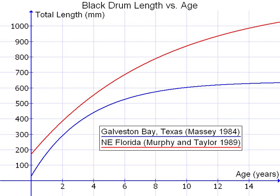In addition, fishery biologists often use a third measure in fishes with forked tails. Fork length is the length of a fish measured from the tip of the snout to the end of the middle caudal fin rays, and is used in fishes in which it is difficult to tell where the vertebral column ends.